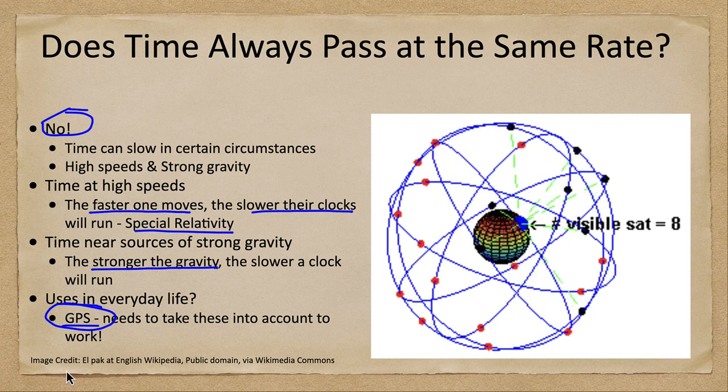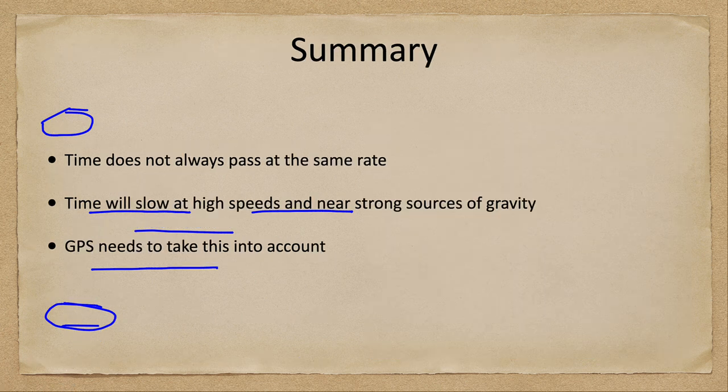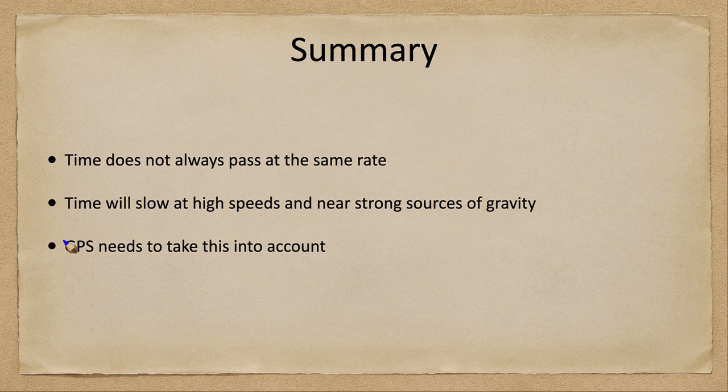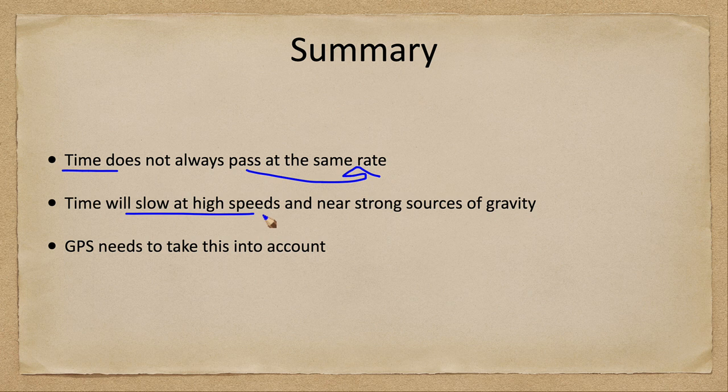Let's go ahead and finish up here with our summary. What we've looked at is that we found that time does not always pass at the same rate. It will slow down at high speeds and near strong sources of gravity. Now that can get very extreme when you get to things like a black hole, but even for things like Earth it is important because GPS signals need to take this into account in order to be accurate.